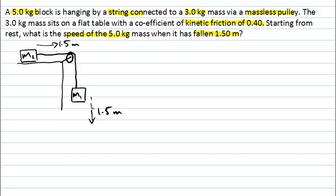In this problem, we're not going to approach it using Newton's laws of motion to calculate accelerations and then use equations of motion. We're going to do the problem using the Work-Kinetic Energy Theorem. The theorem tells us that the net work done on a system equals the change in kinetic energy — that is the final kinetic energy minus the initial kinetic energy. Importantly, work and kinetic energy are both scalars, so there's no vector calculation required.